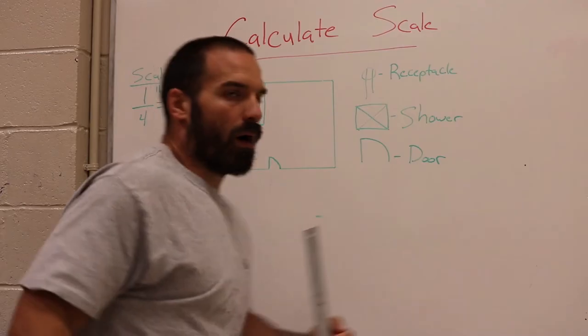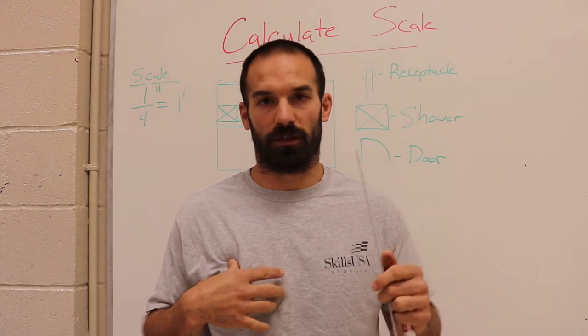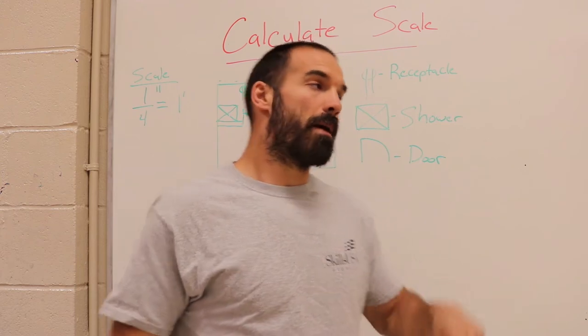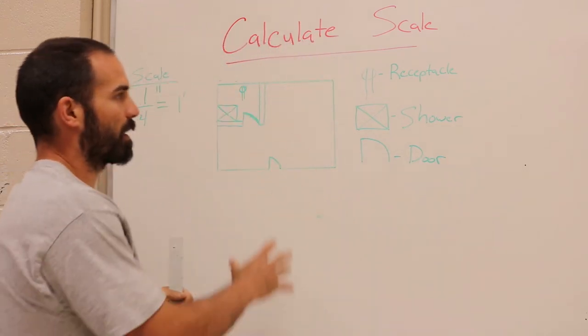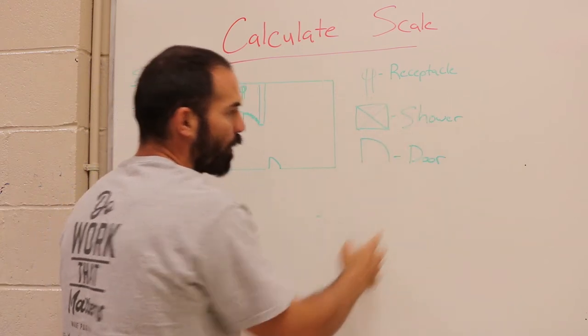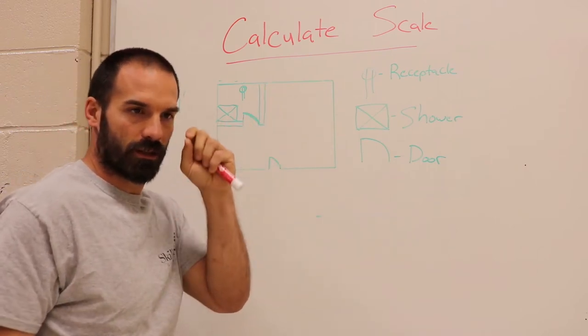All right, so let's look at a set of blueprints here. Yes, these are my blueprints I've drawn. I'm probably one of the worst drawers of all time, and if I was an architect I'd be going hungry. But here is just a simple floor plan. I got my key over here: receptacle, there's a shower and a door.